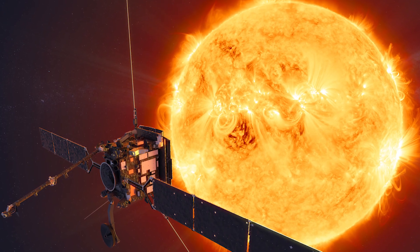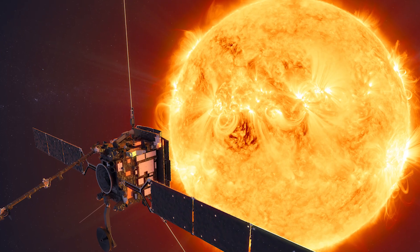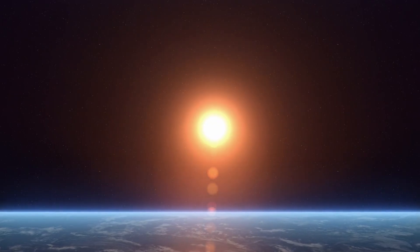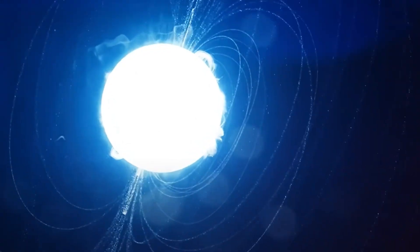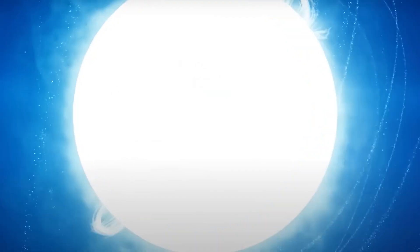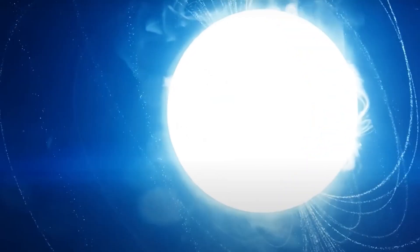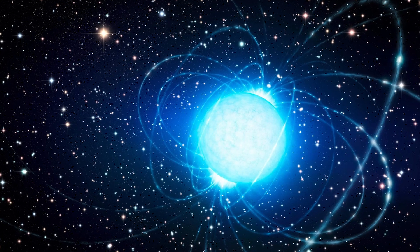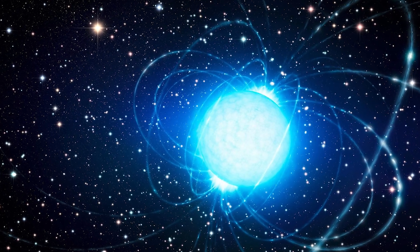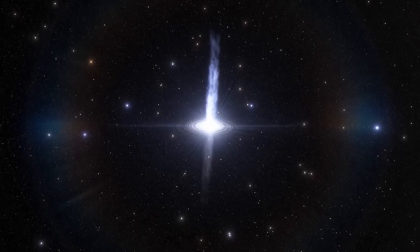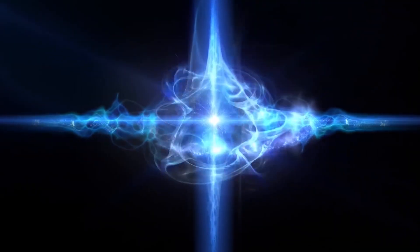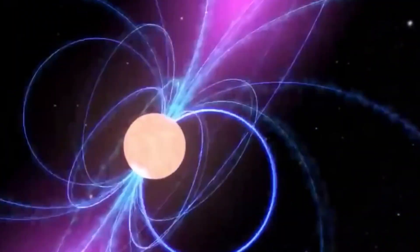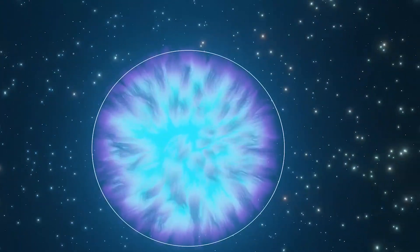Think about its density for a second. The Sun's average density is 1.41 grams per cubic centimeter, just slightly denser than water. Earth clocks in at 5.52 grams per cubic centimeter, but a neutron star has 500 million tons per cubic centimeter. That's 100 trillion times denser than water. What it also implies is that the surface gravity of a neutron star is 200 billion times stronger than Earth's. This also has a ripple effect on time, causing it to move about 30 percent slower on the surface of a neutron star compared to here on Earth.